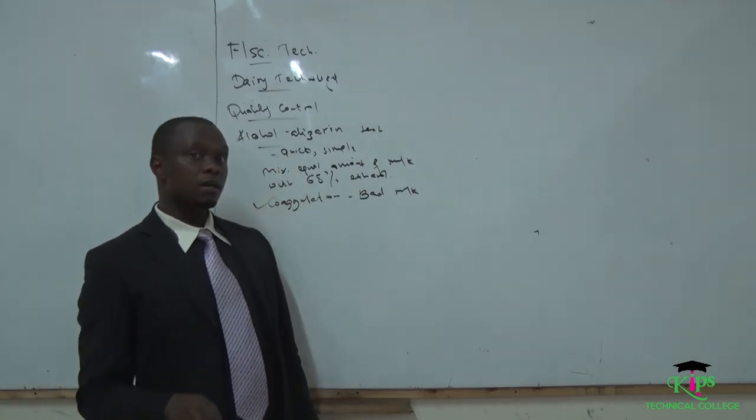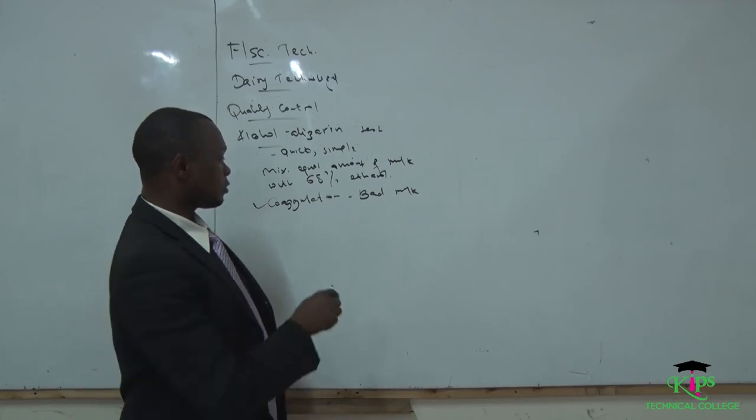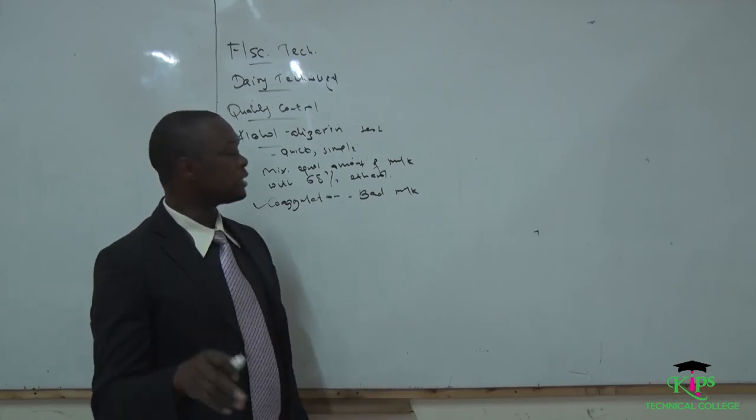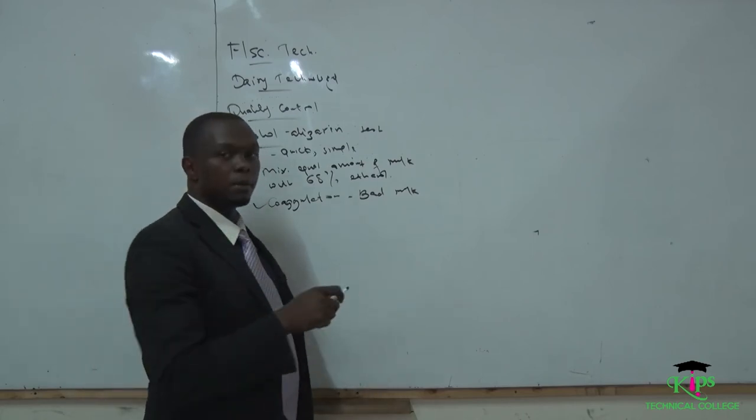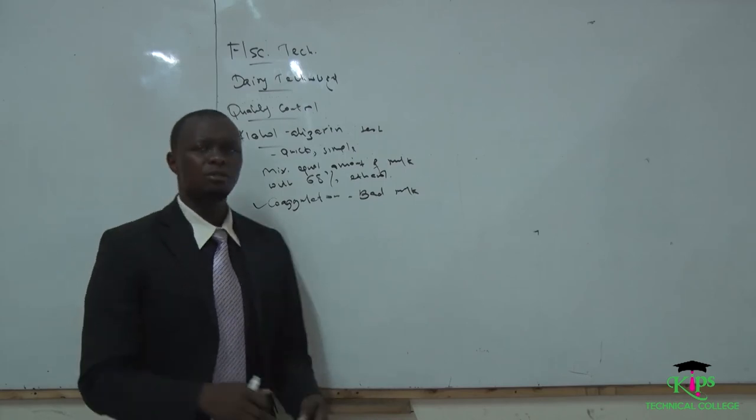If the milk is bad or has a lot of acidity, it will coagulate and therefore the milk will be labeled as bad.